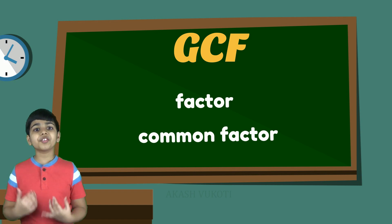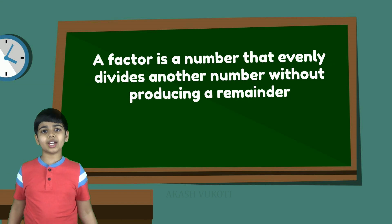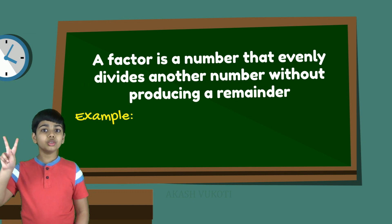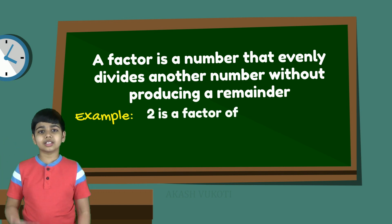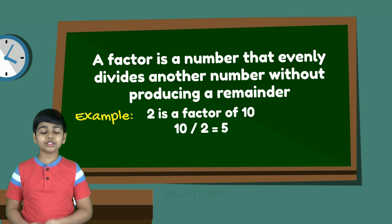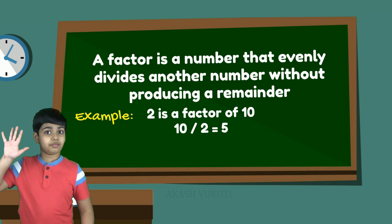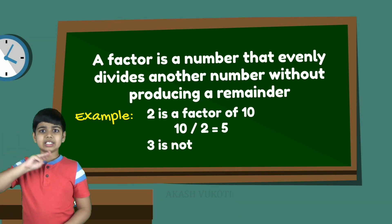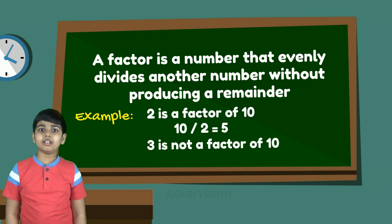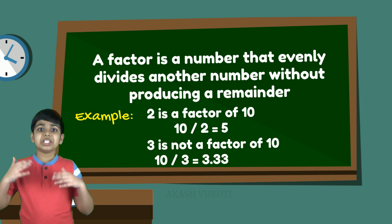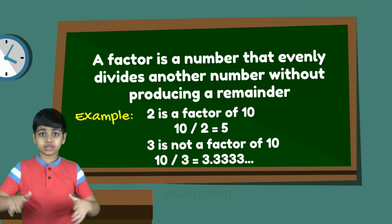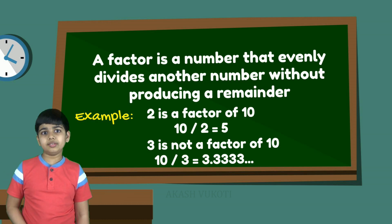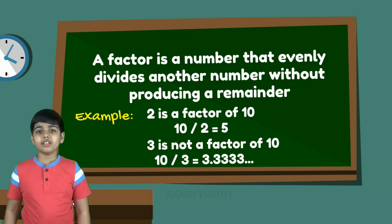First, a factor is a number that evenly divides another number without producing a remainder. For example, 2 is a factor of 10 because 10 divided by 2 is 5 — there are no decimals, it's just the number 5, like you can count it on your fingers. However, 3 is not a factor of 10 because 10 divided by 3 is 3.33333 and so on, an endless string of 3s. And if the quotient of this division has a decimal part, then it is not a factor.